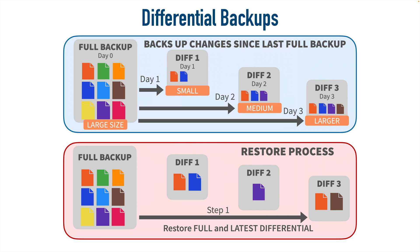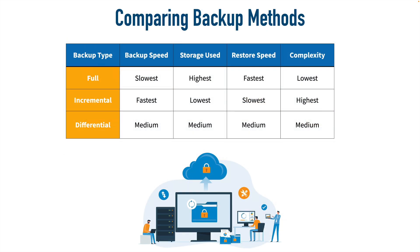For your study, a comparison chart shows the three different backup types side-by-side to help us better understand their trade-offs. Full backups give us the fastest restore time but are the slowest to create and use the most storage. Incremental backups are the fastest to create and use the least storage, but restoring data takes longer and is more complex since we're dealing with multiple files. Differential backups strike a nice balance between full and incremental backups.